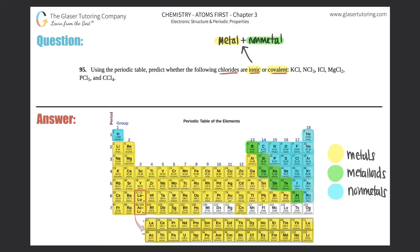Covalent compounds, on the other hand, exist between a nonmetal and another nonmetal. They just have to be all nonmetals — that's the idea of a covalent compound. So if there's no metal present, it's automatically going to be a covalent compound.